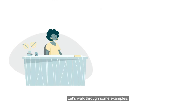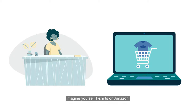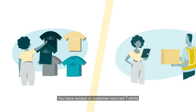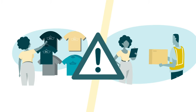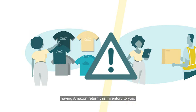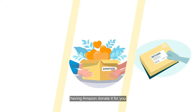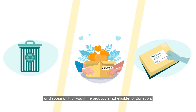Let's walk through some examples. Imagine you sell t-shirts on Amazon. You have excess or customer-returned t-shirts that you want to remove from the Amazon network. Before FBA liquidations, you had only three options: having Amazon return this inventory to you, having Amazon donate it for you, or dispose of it for you if the product is not eligible for donation.